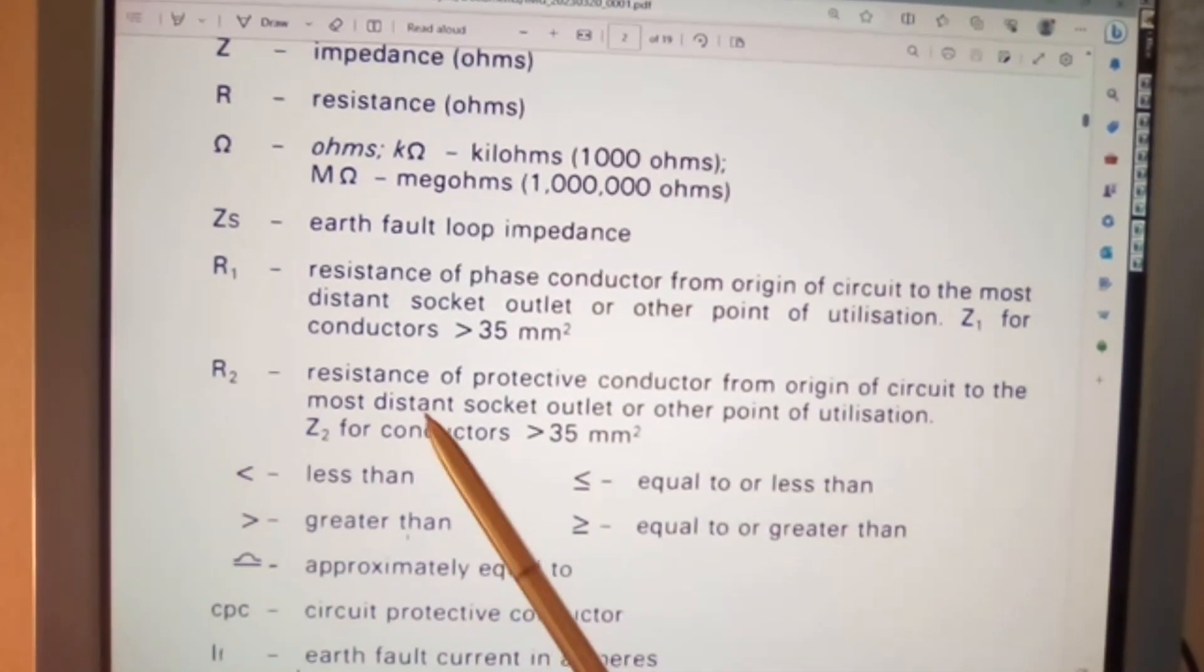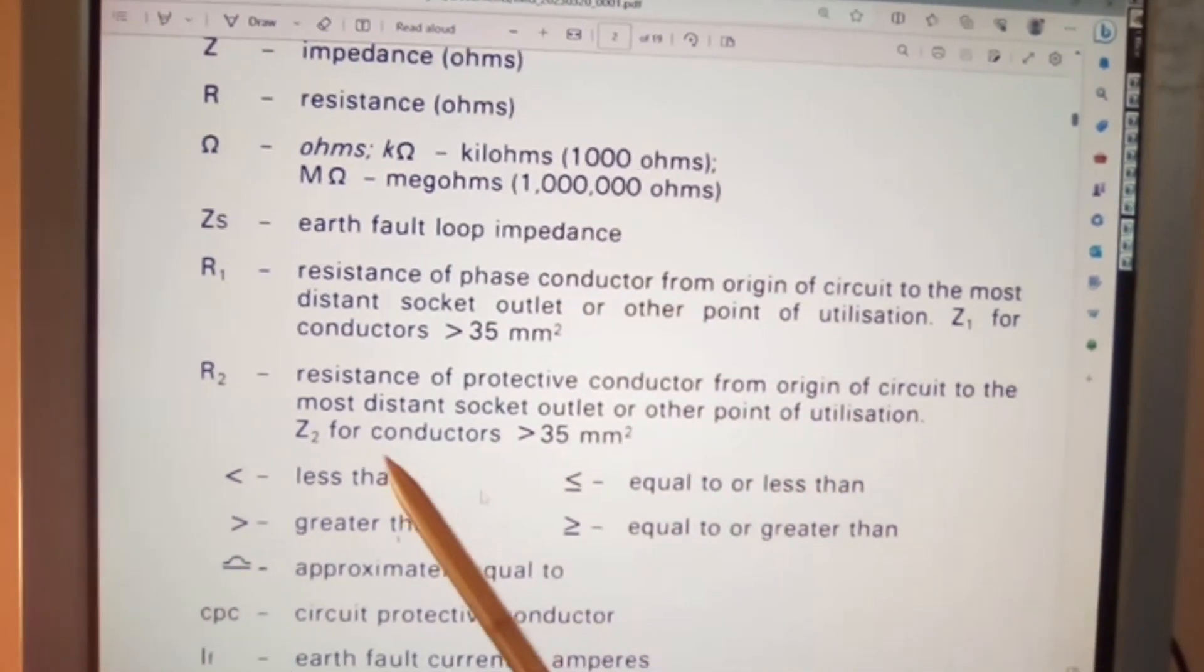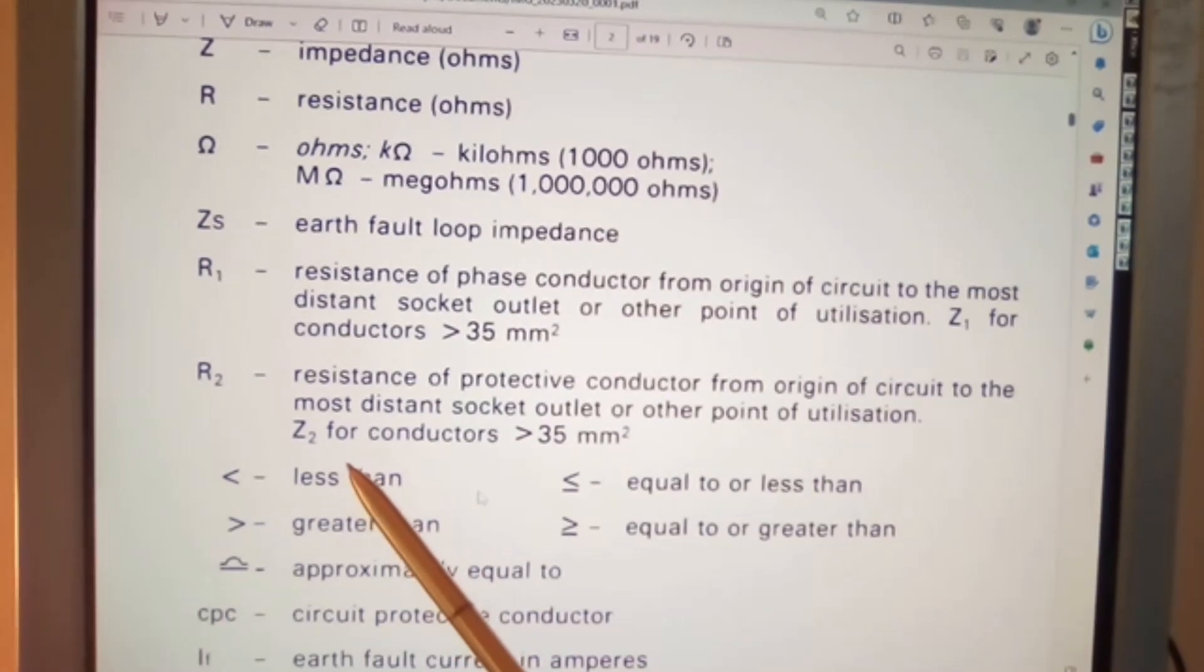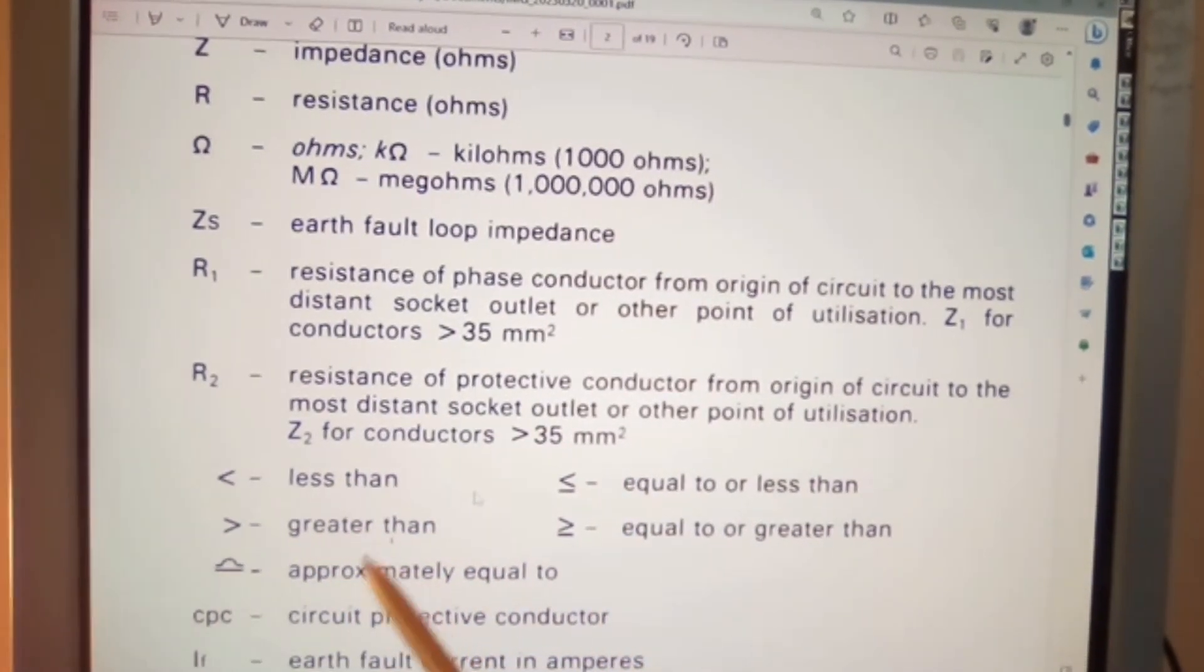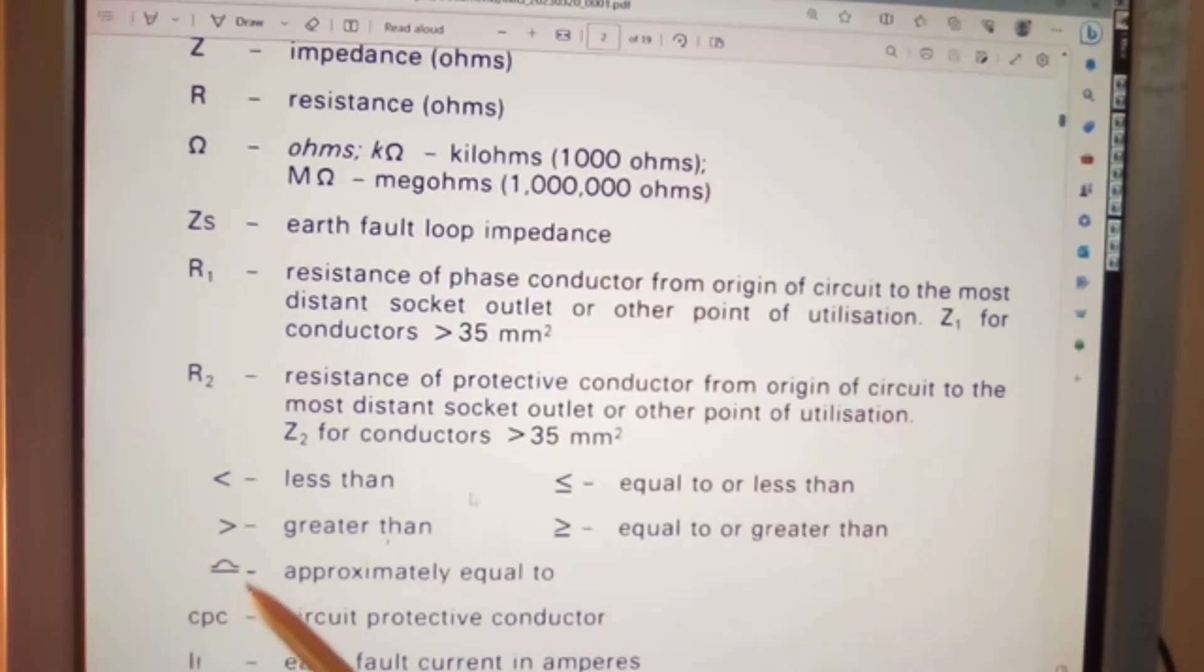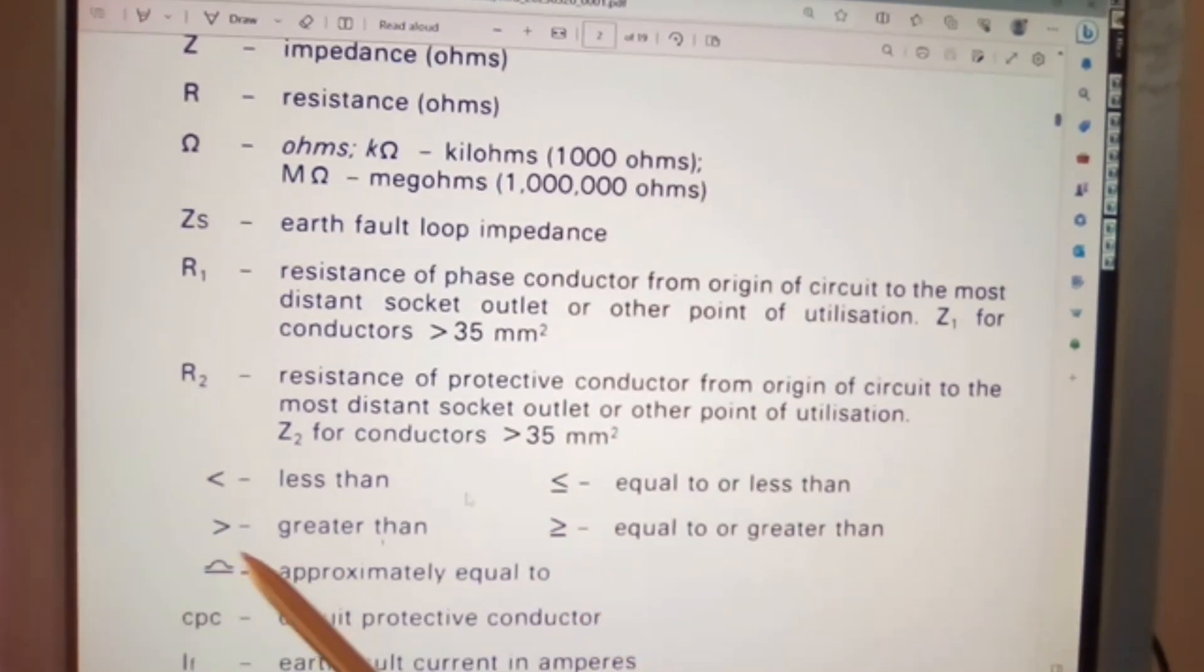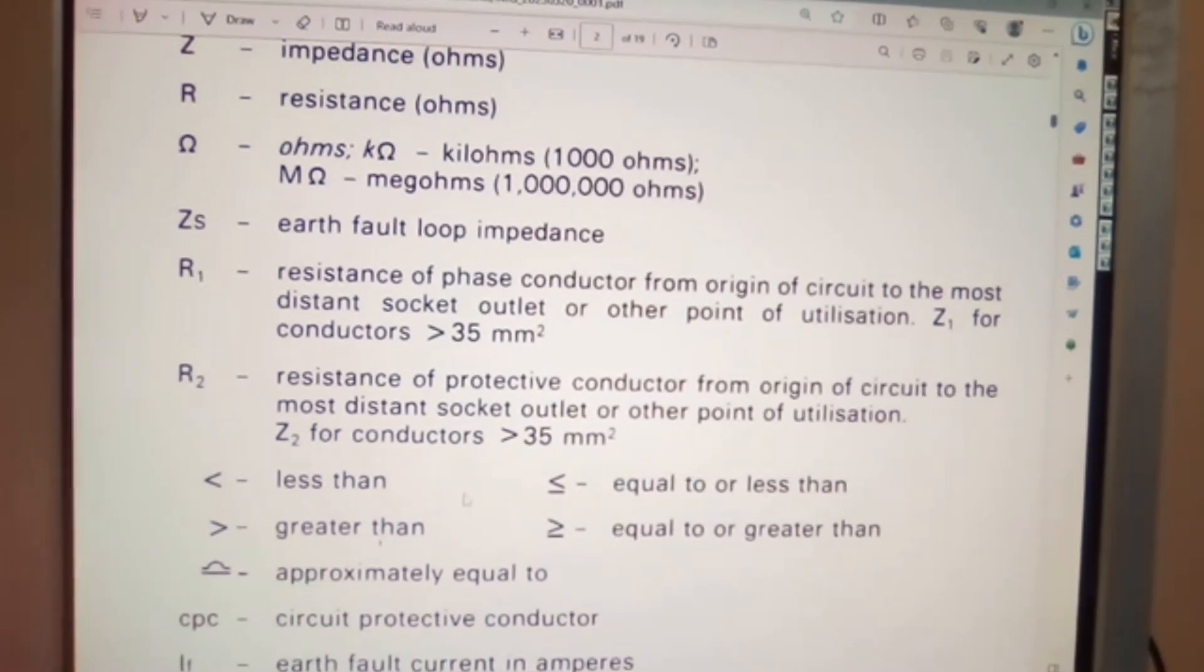Now R2, resistance of protective conductor from origin of circuit to the most distant socket outlet or other point of utilization. That's true for conductors 25 millimeters square. Less than, this symbol means less than. Equal to or less than. Greater than, equal to or greater than. So look at the symbols, that is what we're talking about.